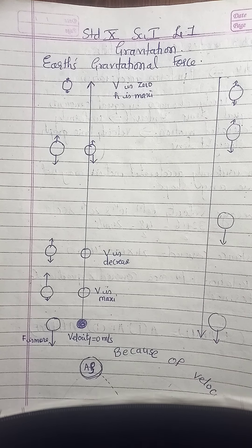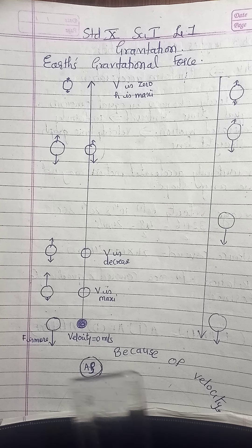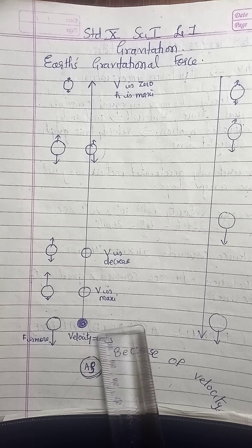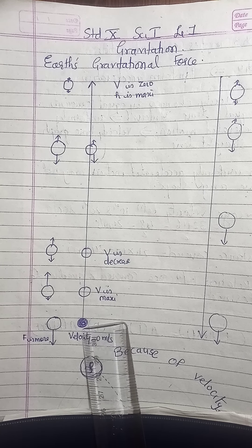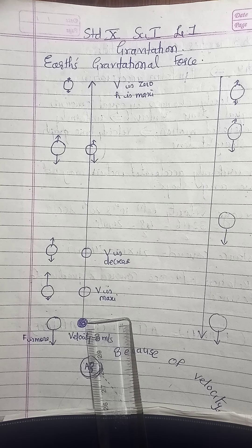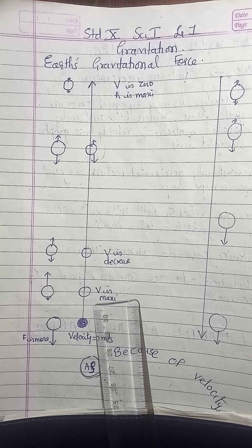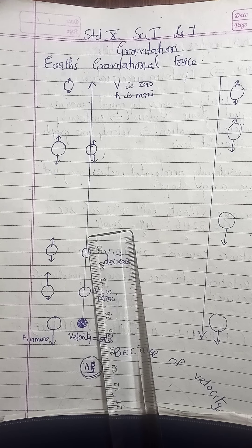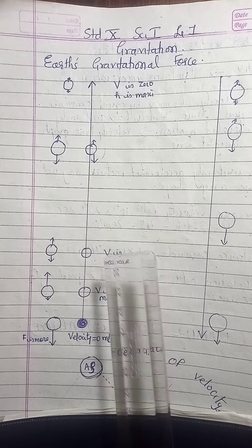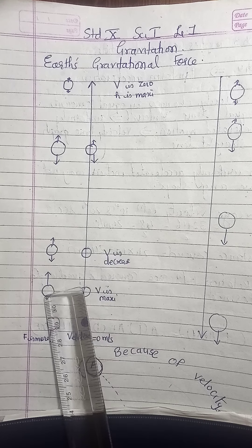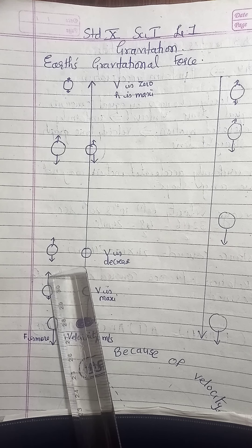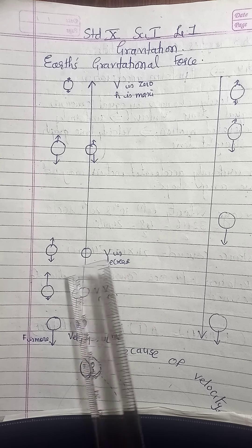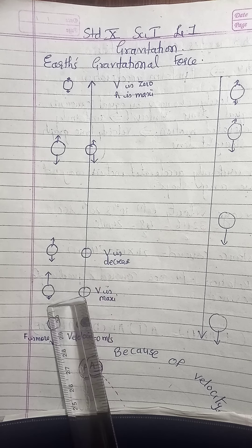Here, in order to explain that, I have drawn this diagram. Imagine an object is at the bottom, on the surface of the Earth — here the velocity is zero. As soon as we apply force and push the object in the vertically upward direction, the velocity is initially maximum. But as it goes above the surface of the Earth, the force of gravity is acting. At every stage, you can see the object has arrows drawn upward and downward — every time two forces are acting, one in the upward direction and one in the downward direction.